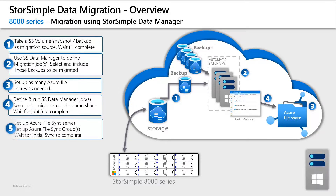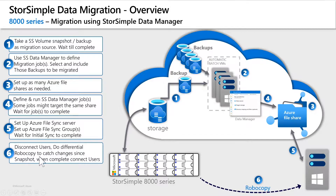Next, ensure you have provisioned an Azure File Sync or AFS server or VM on-premises and that you have installed the latest Azure File Sync agent on it. Then when, and only when, you have confirmed that the StoreSimple Data Manager jobs have completed, you can configure Azure File Sync groups for the Azure File Shares that have finished receiving data from StoreSimple Data Manager. Namespace data will then start flowing and the job status will show initial sync until the namespace has finished syncing. After AFS has completed its initial sync, it's time to take users offline and perform a final robocopy to catch up on any changes the users have made while the migration was in process. When that is complete, users can be reconnected to the new Azure File Sync shares.